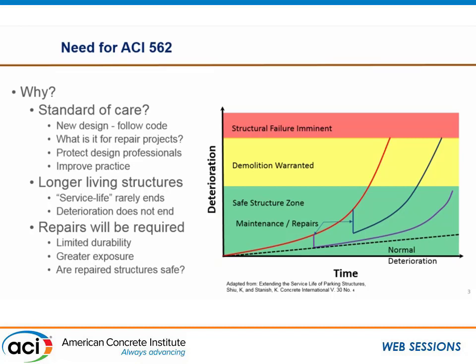Our deterioration doesn't stop — structures are continuously exposed. Every structure we have should be progressing on some normal line. Some level of deterioration over time is going to occur; we do maintenance and repairs. Our concept is we always want to keep our structures in this nice green zone. Some structures are in bad shape — maybe they're in the yellow zone. We want to keep them out of the red zone, bring them back into the green zone. We know repairs are going to be required. The question is whether our codes provide information to get proper durability and safety of a repaired structure.